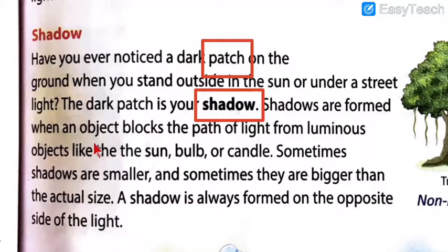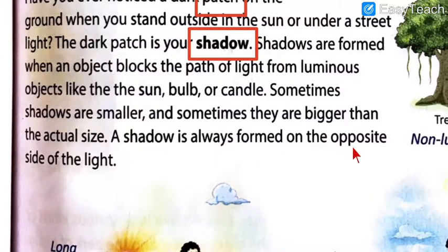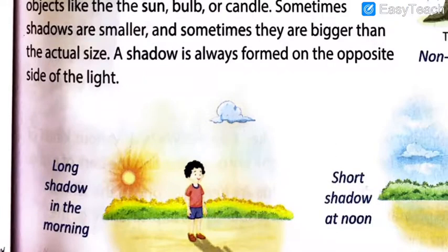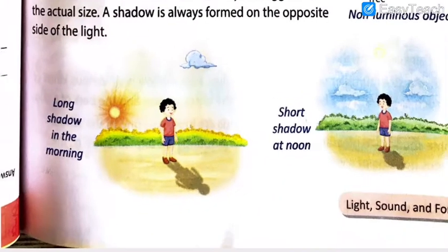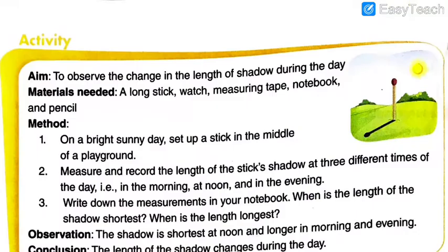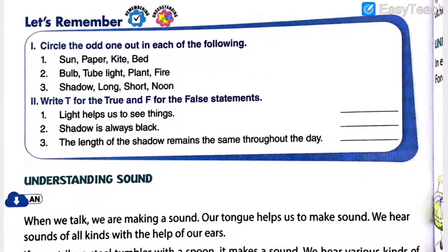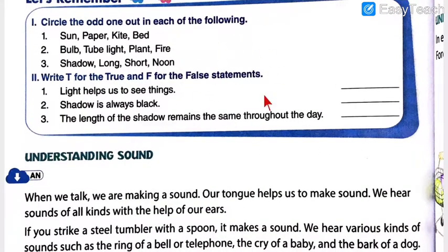Shadows are formed when an object blocks the path of light from luminous objects like the sun, bulb or candle. Sometimes shadows are smaller and sometimes they are bigger than the actual size. A shadow is always formed on the opposite side of the light. You can see the picture given: long shadow in the morning, short shadow at noon. As we are just reading and marking hard words, explanation will be done in the next lecture.